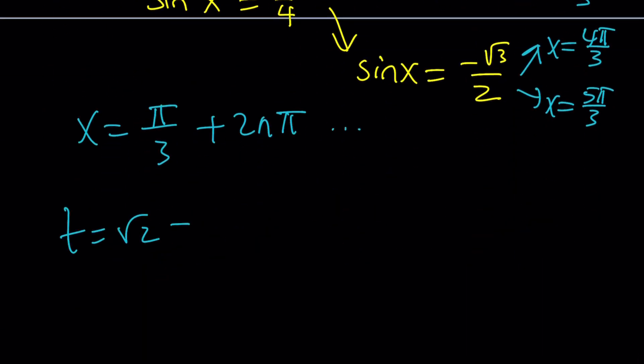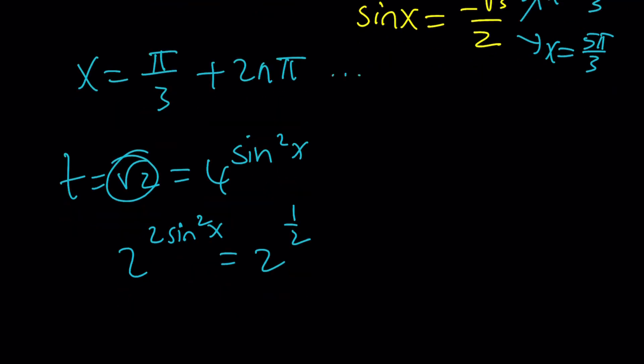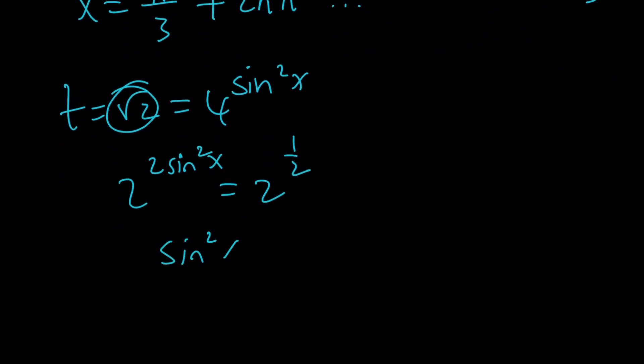And, root 2 is supposed to equal 4 to the power sine squared x. But, this is just, okay. I'm just going to write the 4 to the power sine squared x as 2 to the power 2 sine squared x as before. And, this one is 2 to the power 1 half. Awesome. From here, sine squared x becomes 1 fourth. And, sine x becomes 1 half or negative 1 half.